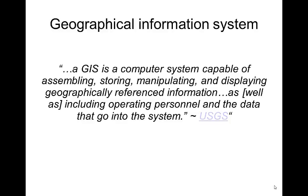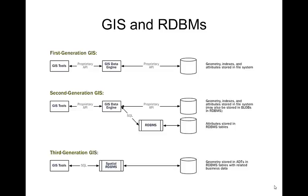Geographical information systems — hopefully you know what those are. A million definitions: computer systems storing, manipulating, displaying geographically referenced data, but maybe also including the people and personnel involved in collecting that data into a full entire system. I think we did see this slide briefly, but hopefully now there's a little more understanding of what it's showing. It's historical, but it's not to say that first generation GIS isn't being used every day. These models have been developed through time, but the earlier models are still perfectly valid and used.